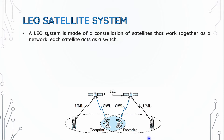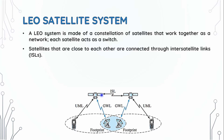As you can see in this figure, there are two LEO satellites shown with their footprints. When satellites are close to each other, there is a link between them called inter-satellite links, also known as ISL.